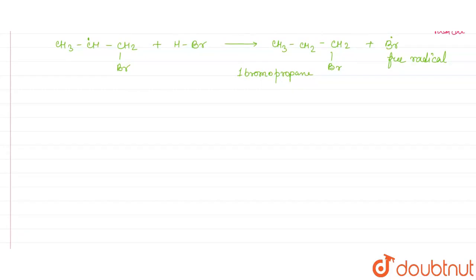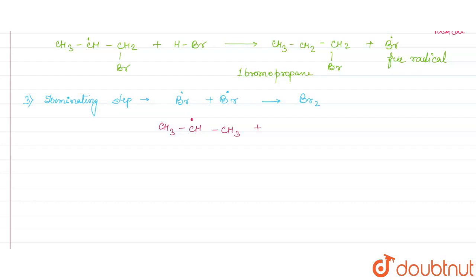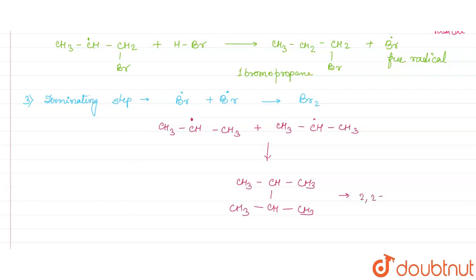The third step is the termination step. In termination, the Br free radicals present in the reaction mixture combine to form Br₂. The unreacted carbon radicals, such as CH₃CH•, also combine with each other to form a product: CH₃CH–CHCH₃ with additional CH₃ groups, giving 2,3-dimethylbutane.